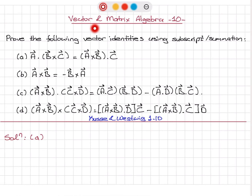Vector and matrix algebra, problem 10. Prove the following vector identities using subscript summation notation. Part A: A dot product with B cross C equals A cross B dot product with C. So let's start with this one.